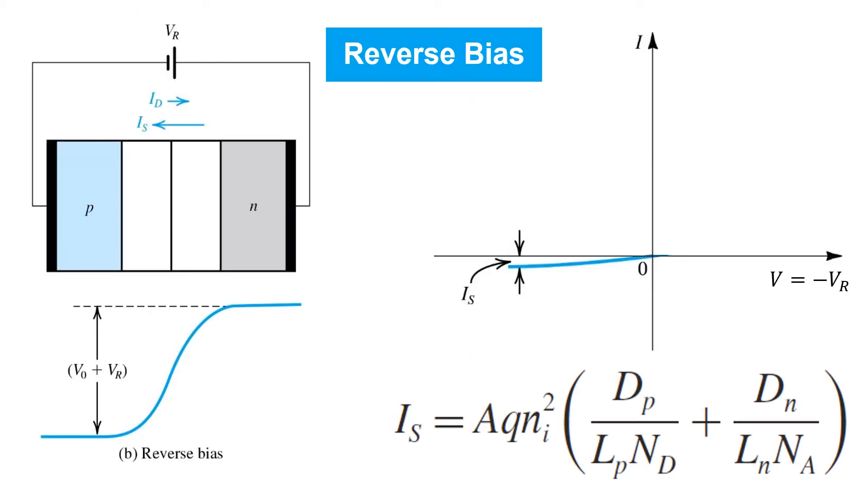Next consider the case where a reverse bias voltage VR is applied. That is, the N terminal is connected to higher potential than the P terminal. With this polarity, the reverse bias voltage VR reinforces the built-in potential and further opposes diffusion currents.